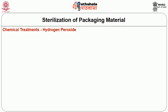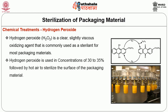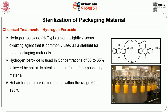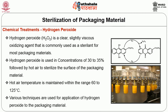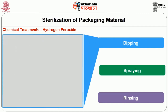The next method of sterilizing packaging material is by chemical treatments. Hydrogen peroxide is a clear, slightly viscous oxidizing agent that is commonly used as a sterilant for most packaging materials. Hydrogen peroxide is used in concentrations of 30 to 35 percent followed by hot air to sterilize the surface of the packaging material. Hot air temperature is maintained within the range of 60 to 125 degrees Celsius. Various techniques are used for application of hydrogen peroxide: dipping, spraying, and rinsing.